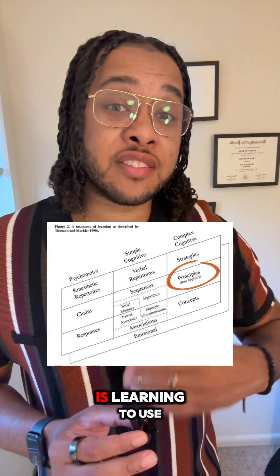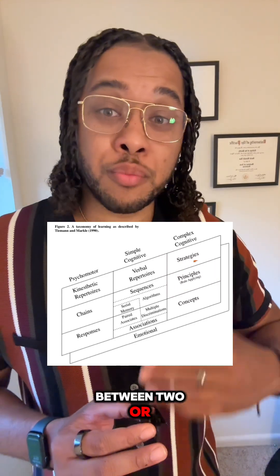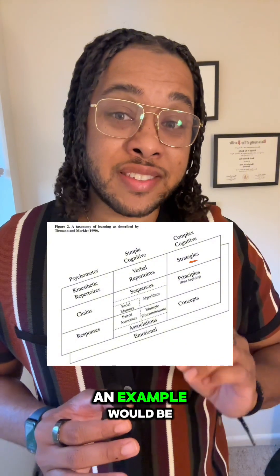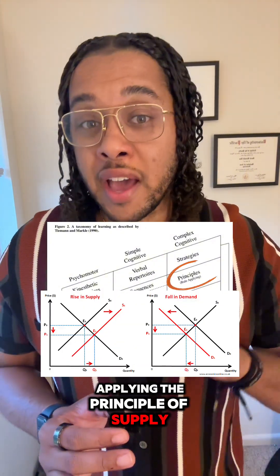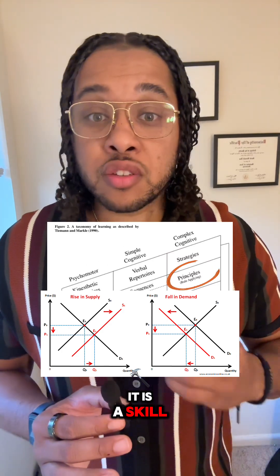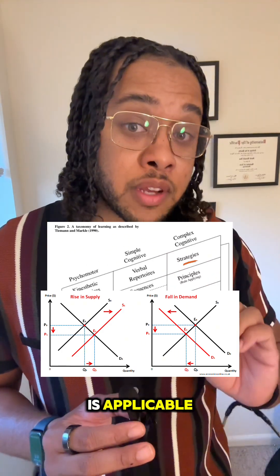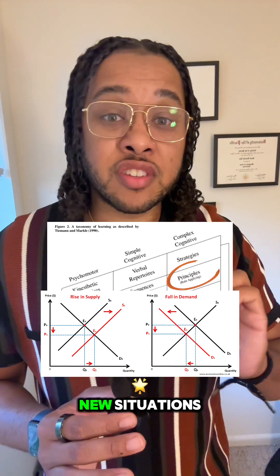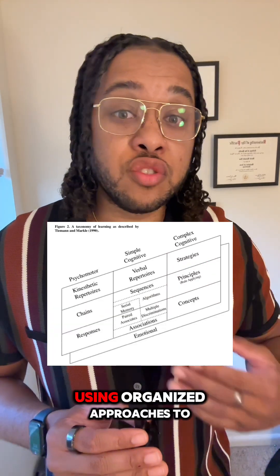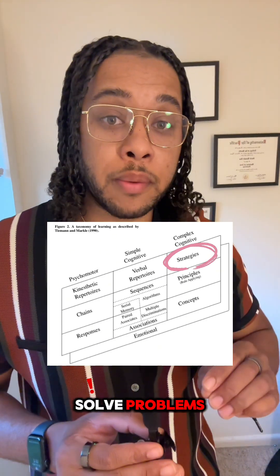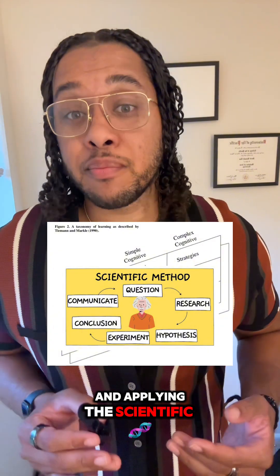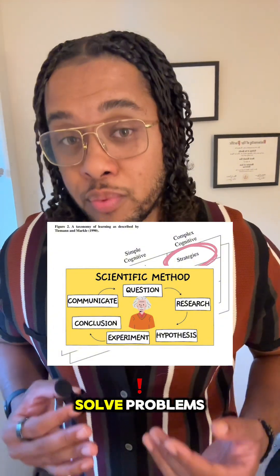Principle applying is learning to use statements that express relationships between two or more concepts to solve problems or explain phenomena. An example would be applying the principle of supply and demand to predict price changes in a market economy — it is a skill to recognize when a principle is applicable and correctly apply it to new situations. Last, we have strategy learning, which is developing and using organized approaches to solve problems or accomplish tasks, such as learning and applying the scientific method to conduct research.